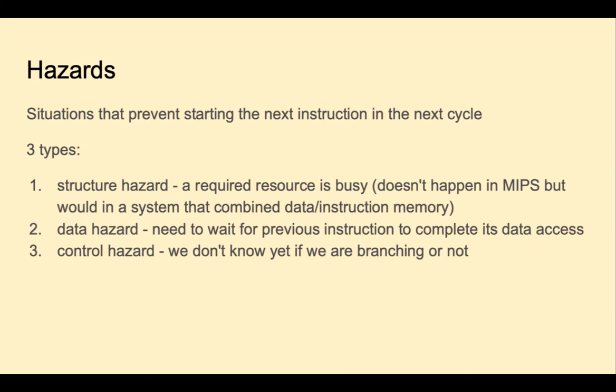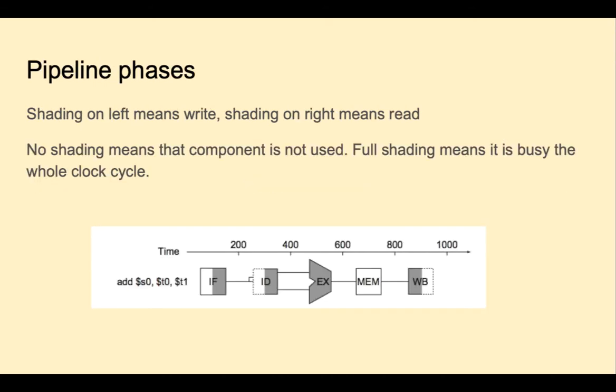But MIPS does have the other type of hazards. The first is a data hazard. We need to wait for the previous instruction to complete its data access or writing back to the register file. And the third type is a control hazard, a branch hazard. When we start executing a branch instruction, we don't know yet if we're branching or not. Let me explain these diagrams from the book. The way it works is that shading on the left means a write. So we see in the writeback stage we have shading on the left. And shading on the right means reading. So for reading from instruction memory or reading a register file, we have shading on the right. No shading means that component's not used. So an add doesn't use the data memory. And full shading means it's busy the whole clock cycle.